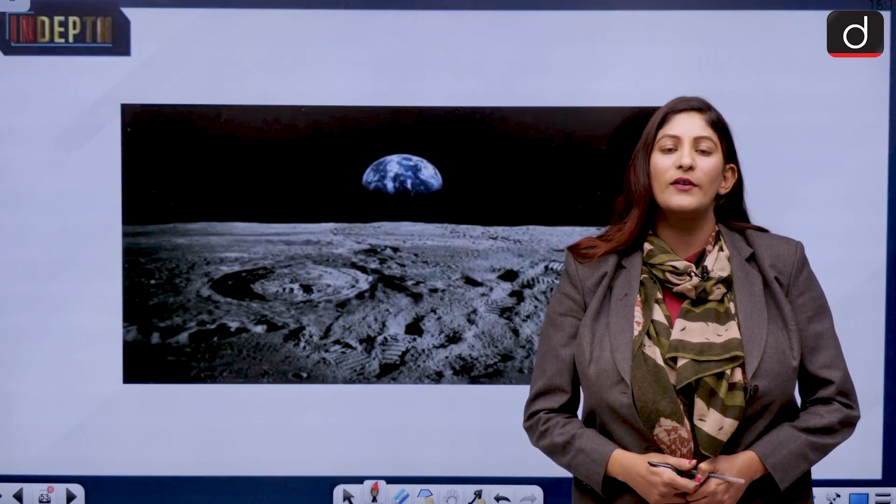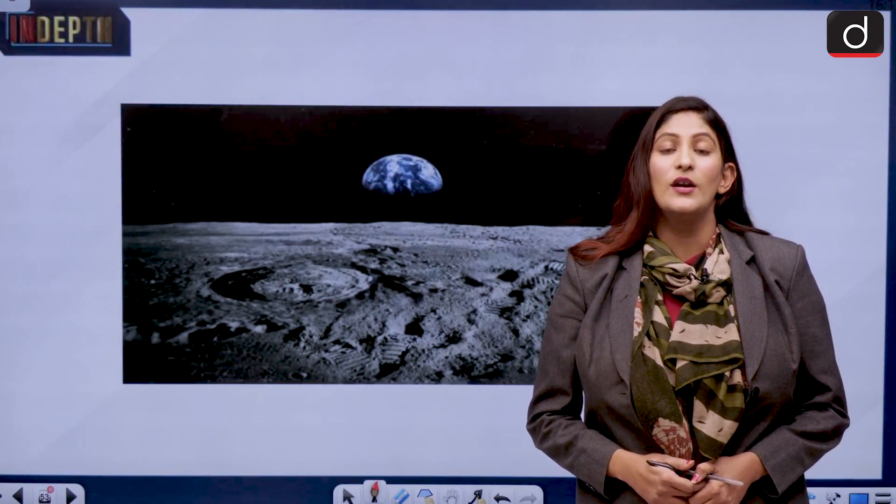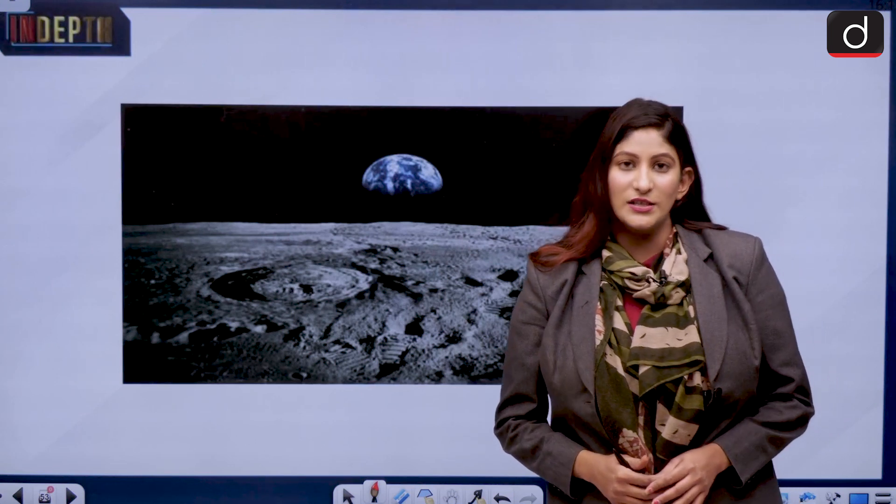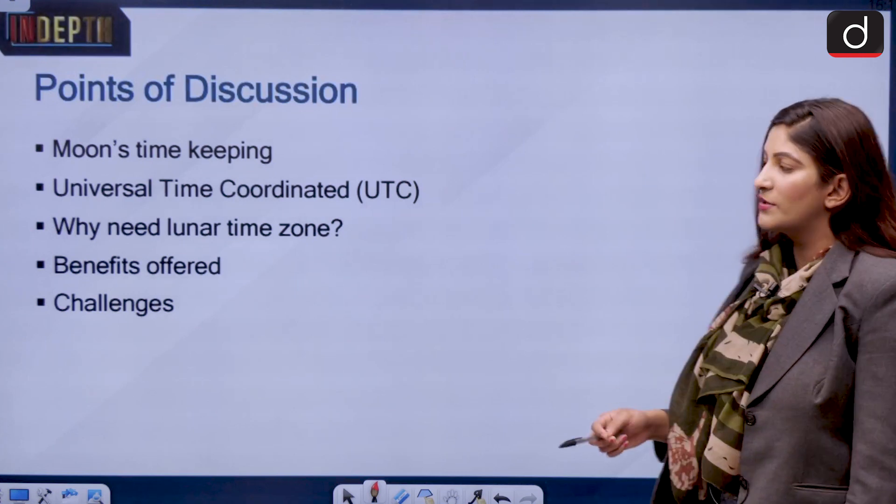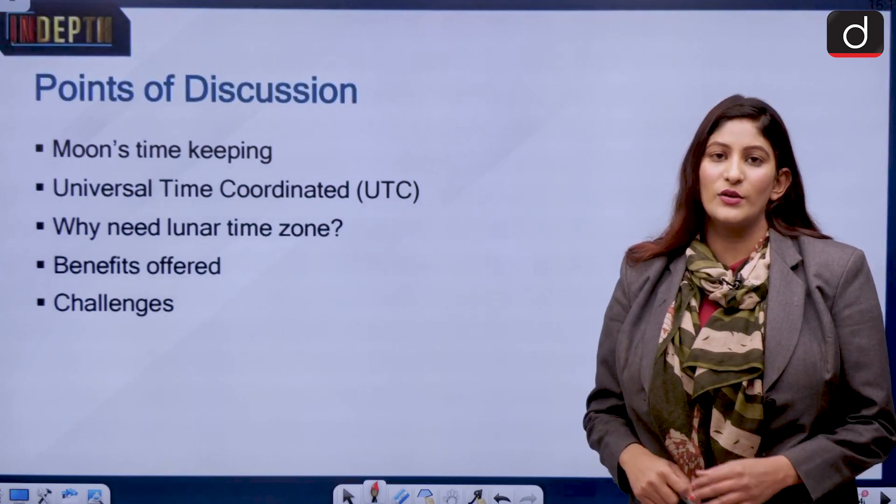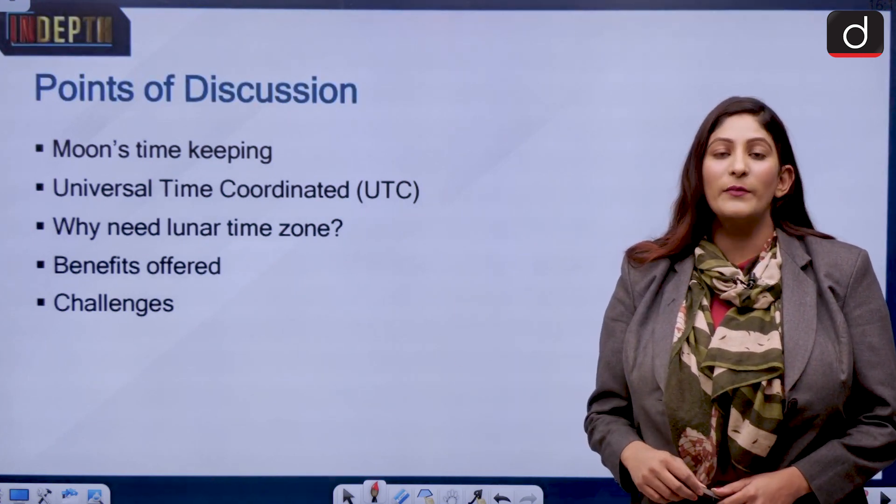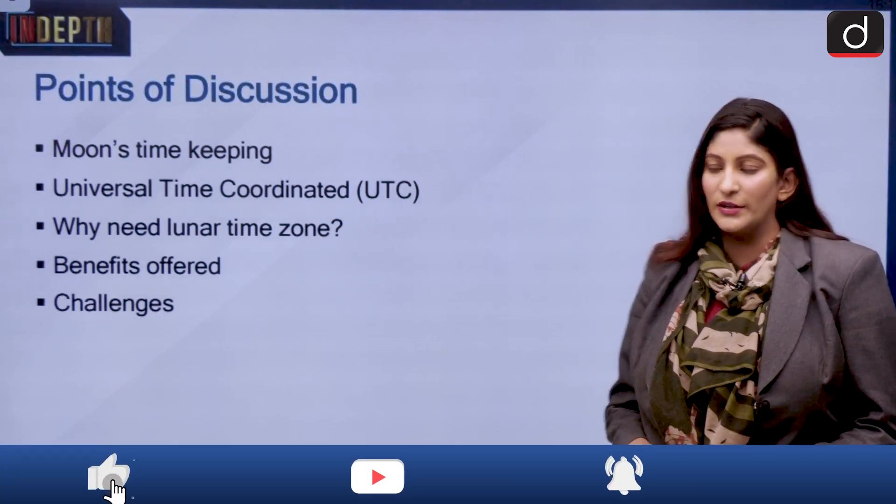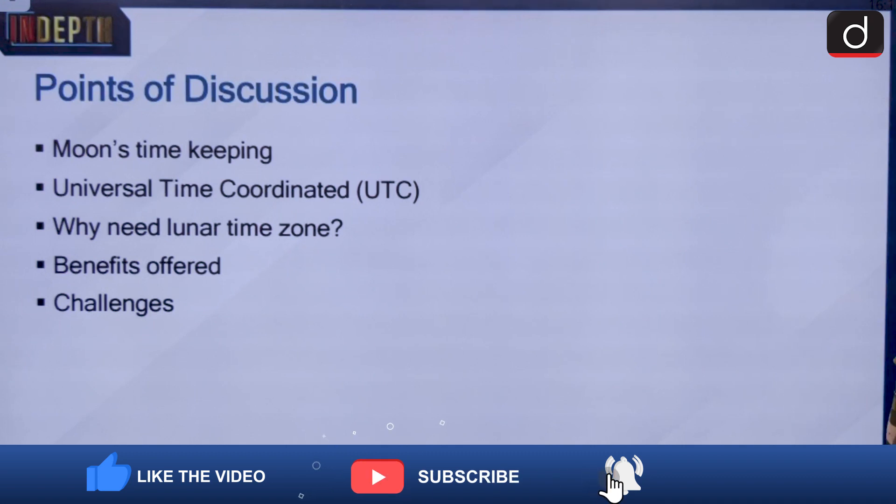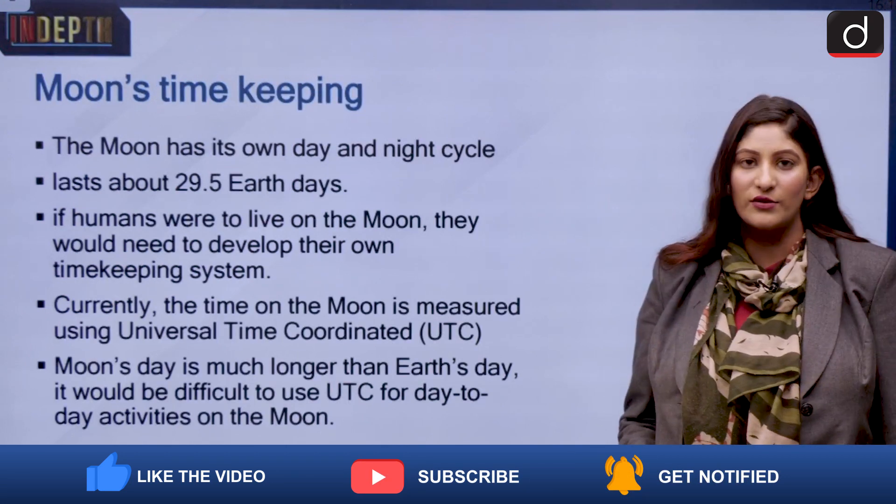There is a need for having time zones for the only natural satellite of the earth, that is the moon. Let us look at this. Why do we need it and how will it work? These are the myriad topics that we are going to discuss step by step from the perspective of GS paper 1 and GS paper 3. From the prelims perspective it is also very important.